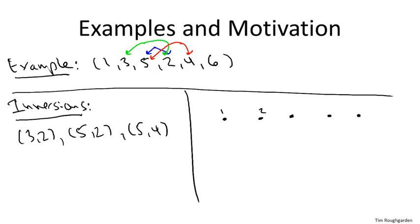But pictorially, we can think of it thusly. We can first write down the numbers in order, one up to six, and then we can write down the numbers again, but ordered in the way that they're given in the input array. So one, three, five, two, four, six. And then we can connect the dots, meaning we connect one to one, we connect two to two, and so on.